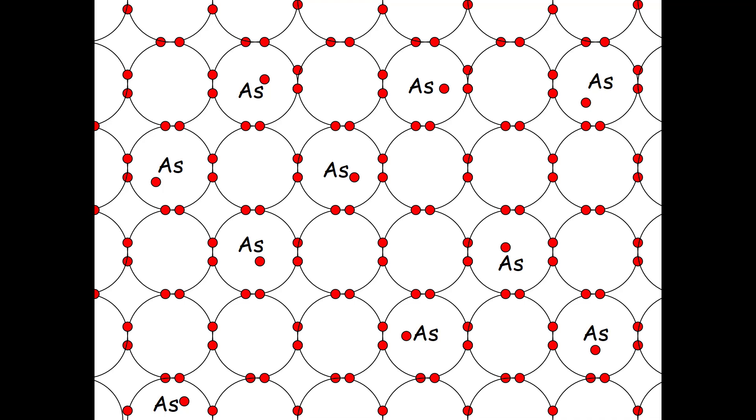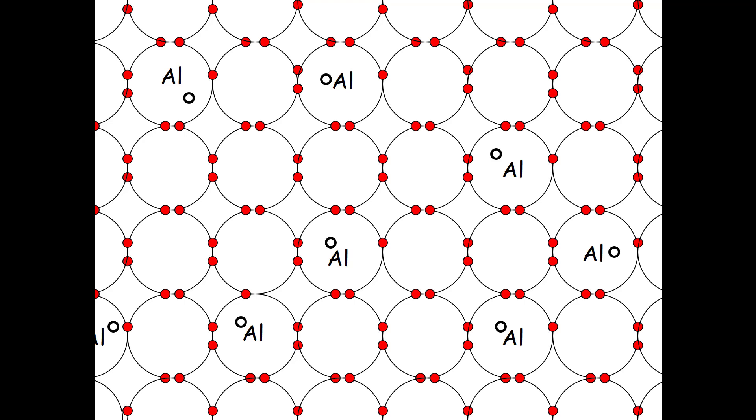For example, we're showing arsenic atoms have five outer electrons. So there's not a place for this extra electron to be shared with the other silicon atoms. If we use aluminum instead, aluminum only has three outer layer electrons. For example, this aluminum has three electrons. It's unable to share with this silicon. It's missing. It would like to have another electron, say right there, but it's missing one.